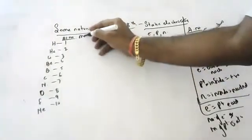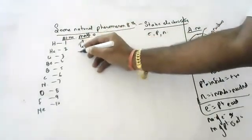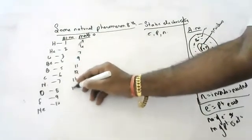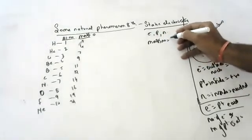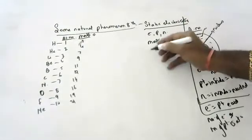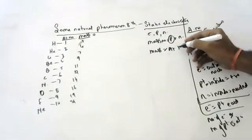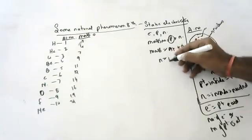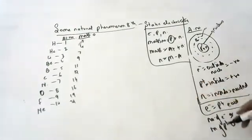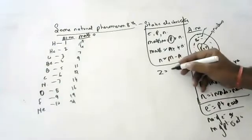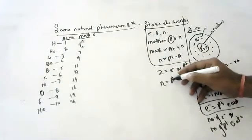Now let's look at mass number. The mass number of hydrogen is 1, helium is 4, lithium is 7, beryllium is 9, boron is 11, carbon is 12, nitrogen is 14, oxygen is 16, fluorine is 19, neon is 21. Mass number equals protons plus neutrons, which means mass number equals atomic number plus neutrons. If you want neutrons, do mass number minus atomic number.